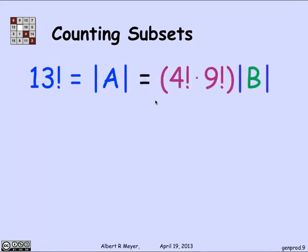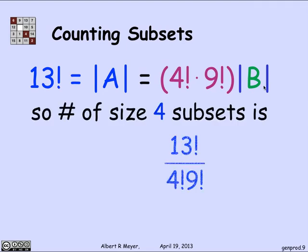And that means that by applying the division rule, I've discovered that the size of A, which I know is 13 factorial, is equal to that K of the K to 1 of 4 factorial times 9 factorial times the size of B. B is the subset of size 4 that I'm trying to count. And so what I get is that the size of B is simply 13 factorial divided by that K, 4 factorial, 9 factorial. 13 factorial over 4 factorial, 9 factorial.